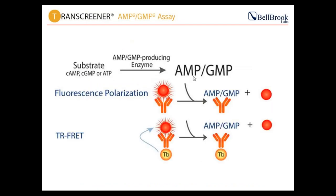The assay is available in two detection formats: fluorescence polarization (FP) and TR-FRET. The primary goal of offering two formats was to overcome the instrumentation barrier. Most instruments are multi-mode readers and can read FP, TR-FRET, fluorescence intensity, luminescence, and absorbance — but they tend to perform one better than the other. We also found that as we started selling reagents, people tend to prefer one format over the other.